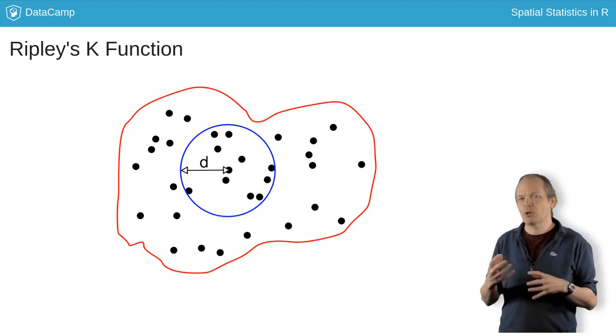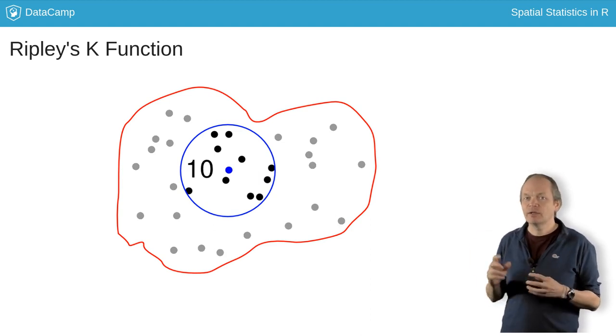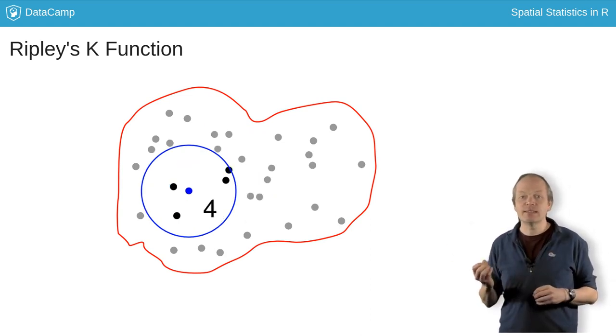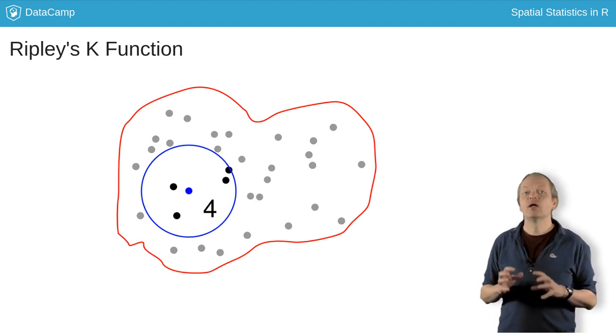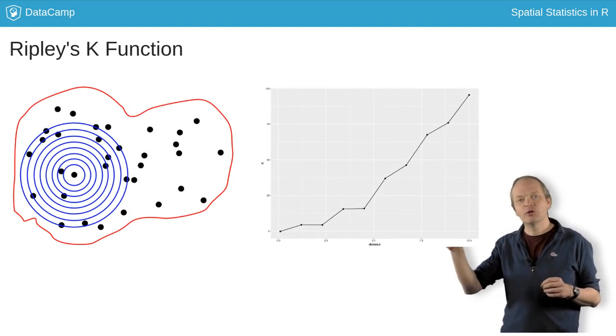To estimate it for some given distance d, visit each event in turn, and count the number of other events in a circle of radius d. Take the average, that's K of d. Do that for a number of values of d, and you can plot the function.